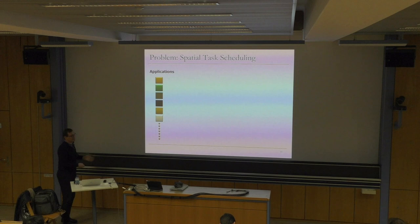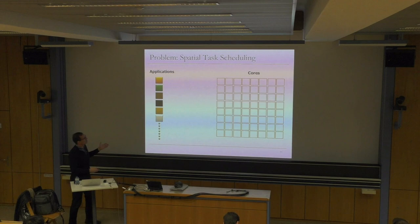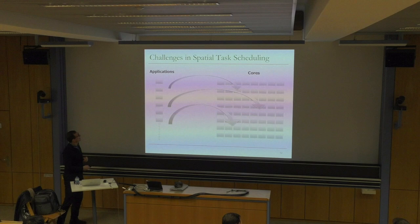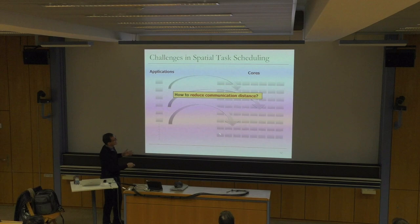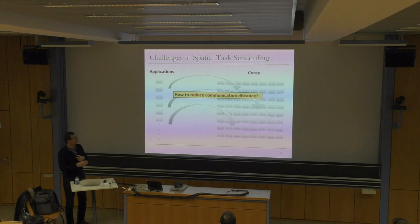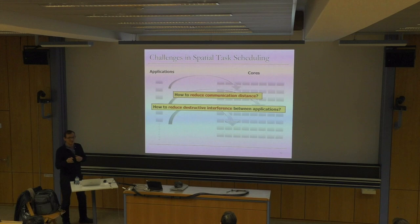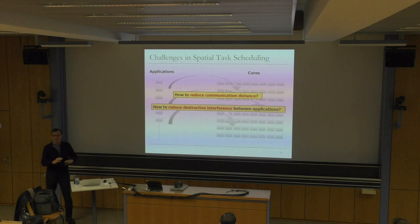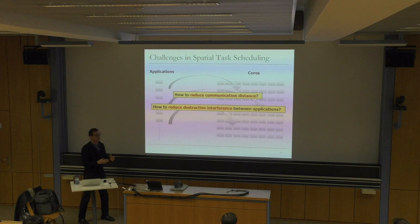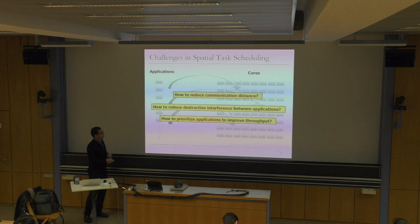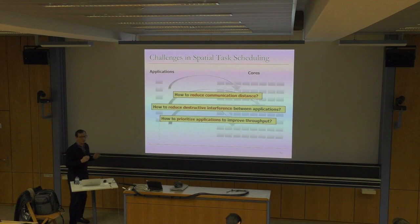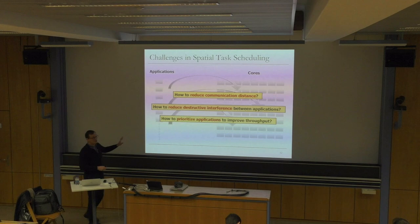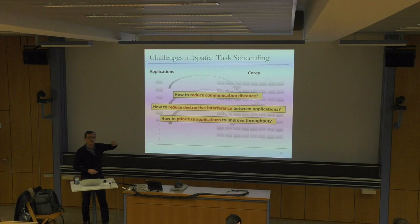We looked at this from the perspective of spatial task scheduling. You have applications with different characteristics — how do you map them to different cores? There are many considerations: how do you reduce communication distance between an application and its data? How do you reduce destructive interference between applications, such as a light one and a heavy one? How do you prioritize applications to improve throughput? The problem is even more complicated because there is a spatial aspect to task scheduling, and you have many resources.